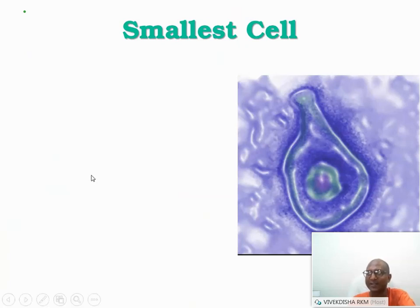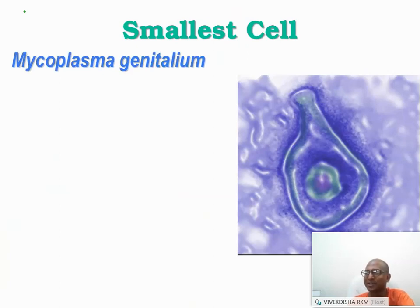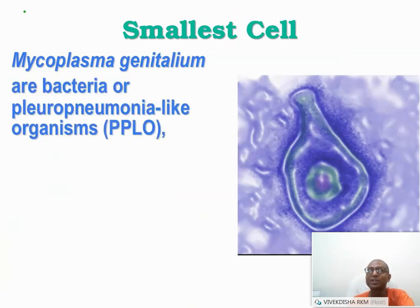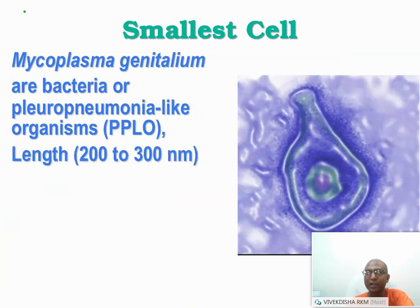The smallest cell — to decide which kingdom, first check if it's prokaryotic or eukaryotic. If prokaryotic, we can safely say Monera. Mycoplasma genitalium and similar species are bacteria, sometimes represented by the terminology PPLO — Pleuro Pneumonia Like Organisms. Today it is grouped under Monera because it is prokaryotic in nature. Its length is 200 to 300 nanometers.